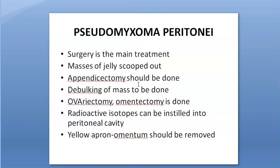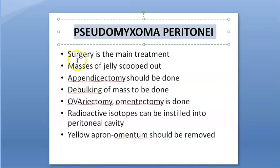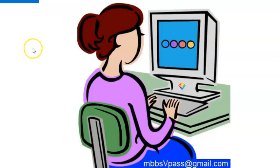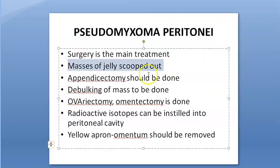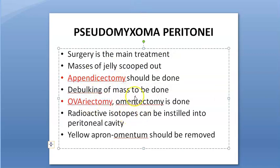How do you treat pseudomyxoma peritonei? Surgery is the main treatment. When you open the abdomen you will find masses of jelly — these are scooped out. You perform appendectomy, oophorectomy, and omentectomy — removing the appendix, ovaries, and omentum. Debulking of the mass is done.